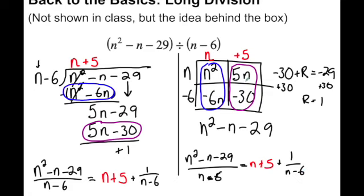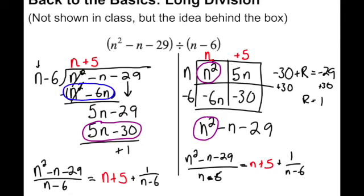With the box method, we have two key patterns to always think about. The first key pattern is that the leading term always goes in the upper left. The other thing we know is that you're always going to find like terms on the diagonals. By following these common patterns with the box, you can be really effective in your execution.